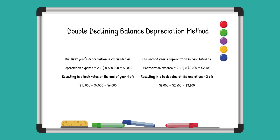So at the end of the first year, the machinery's value is $10,000 minus the $4,000 of depreciation, which leaves them with a $6,000 book value.